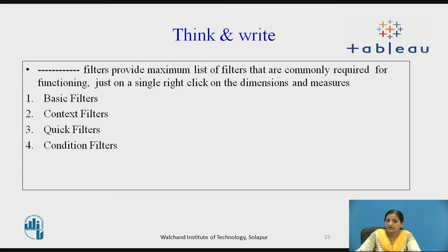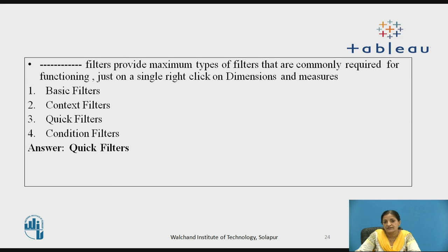Now we will pause the video. Think and write: which filters provide the maximum list of filters commonly required for functioning, just on a single right-click on the dimensions and measures? Are those basic filters, context filters, width filters, or condition filters? As per the discussion in the previous slides, on a single right-click on the dimensions and measures a list of various filters opens which can be applied on those dimensions and measures — and these are nothing but the quick filters.